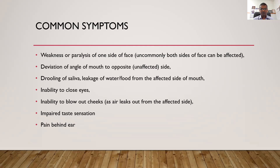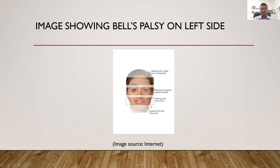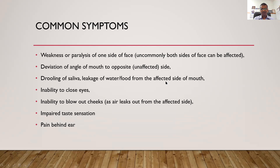Bell's Palsy refers to paralysis of one half of the face. Just to show you this picture — you can see that the left side of the face is paralyzed. It leads to paralysis or weakness of one half the face, and sometimes both sides can be weak also. When patients try to close their eyes, they are not able to close one side, so one eye remains open.